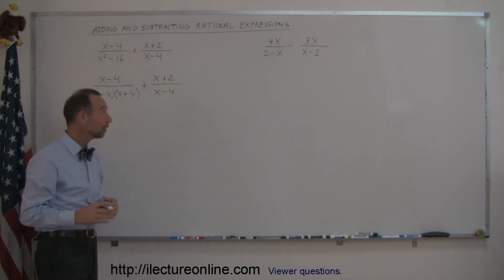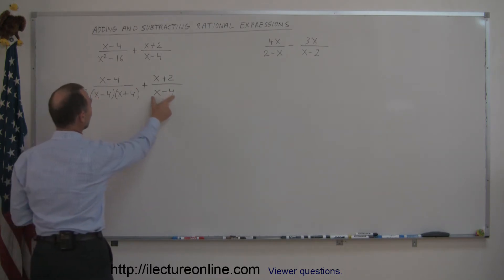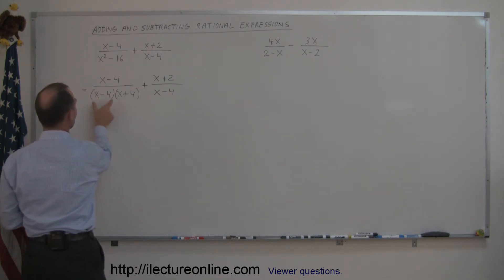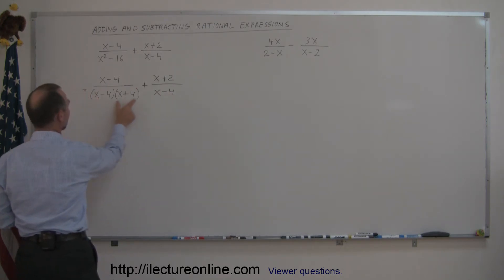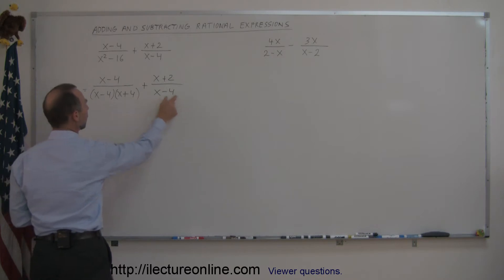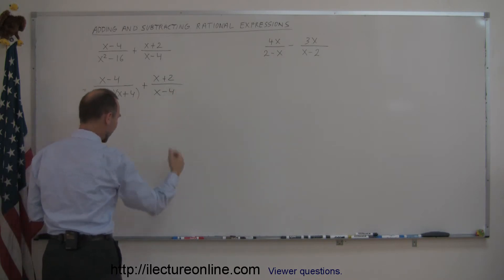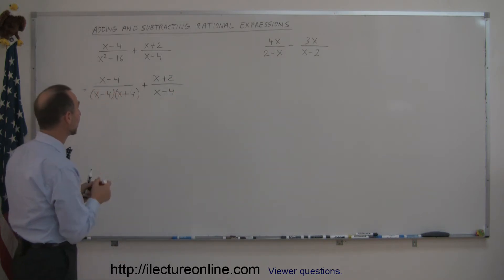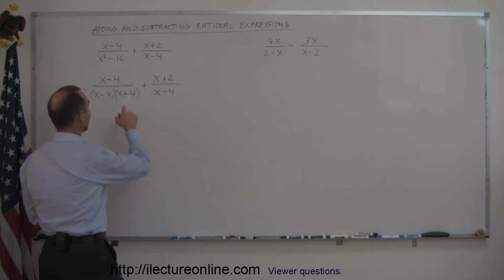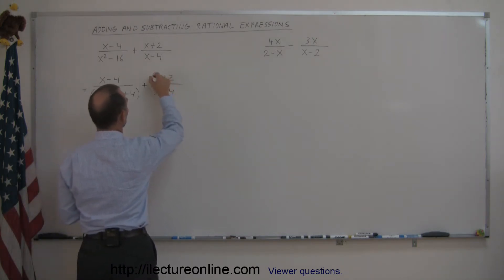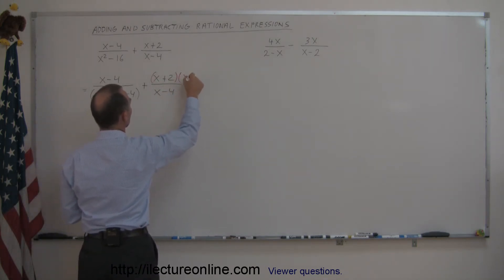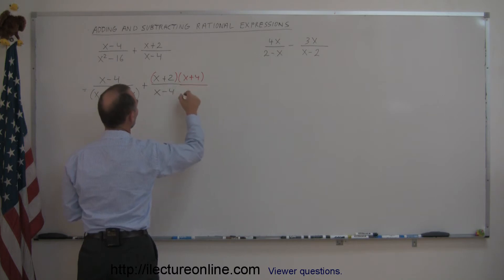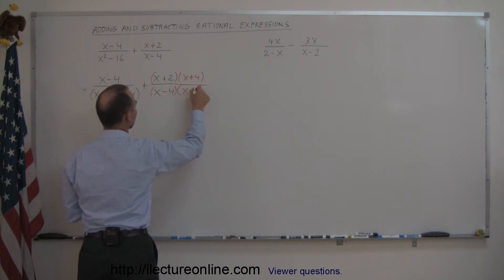Now you look and you see that you have an x minus 4 here and an x minus 4 there, but you don't have the x plus 4 over here. So to get that, you're going to multiply both the numerator and the denominator by x plus 4. So we go like this — x plus 4 — and multiply this by x plus 4.